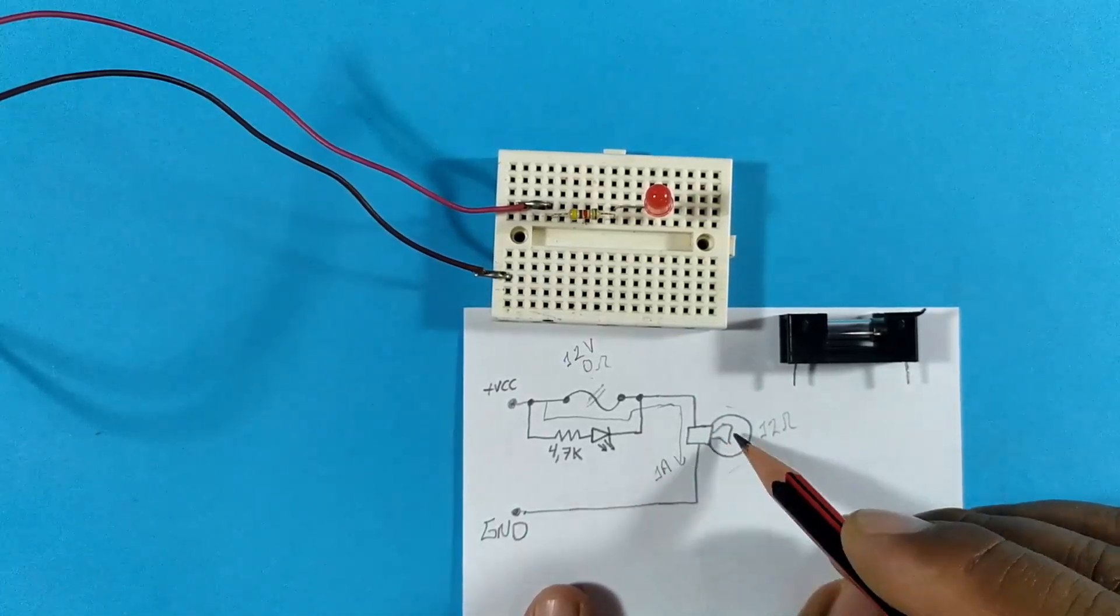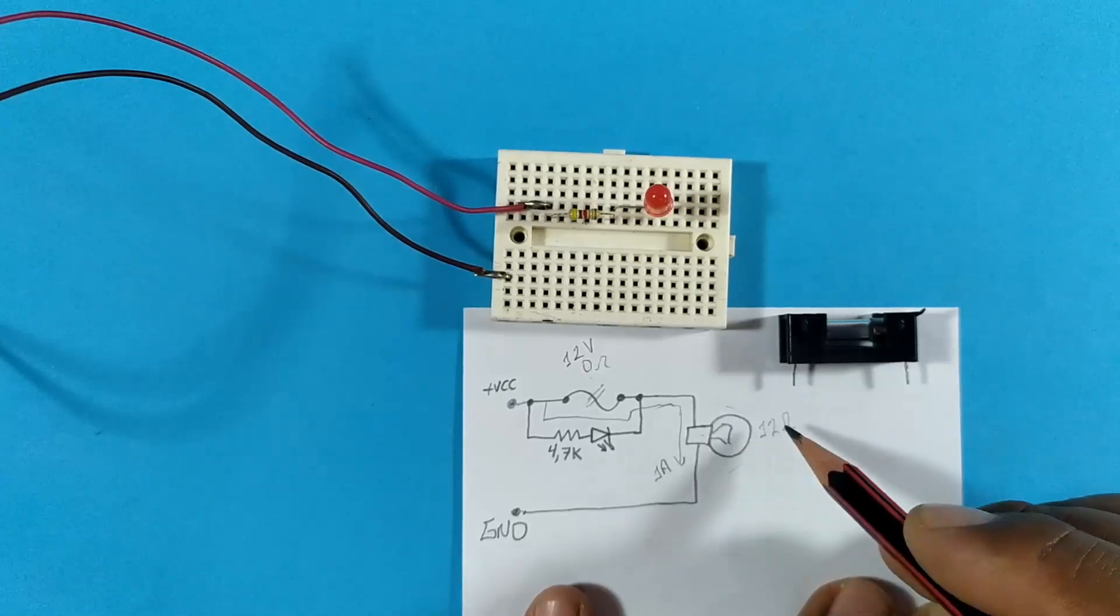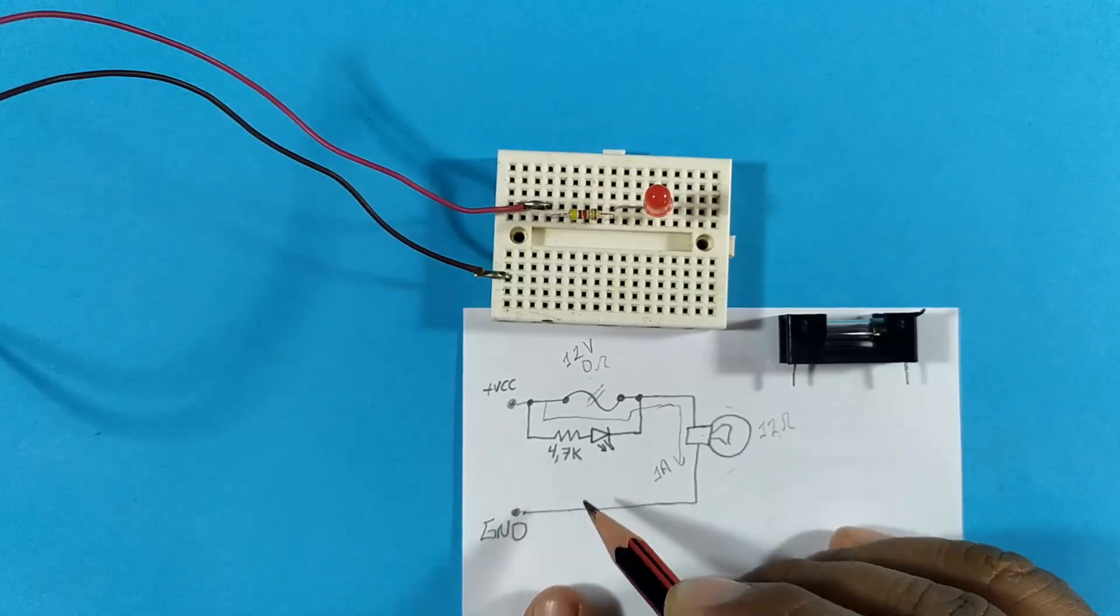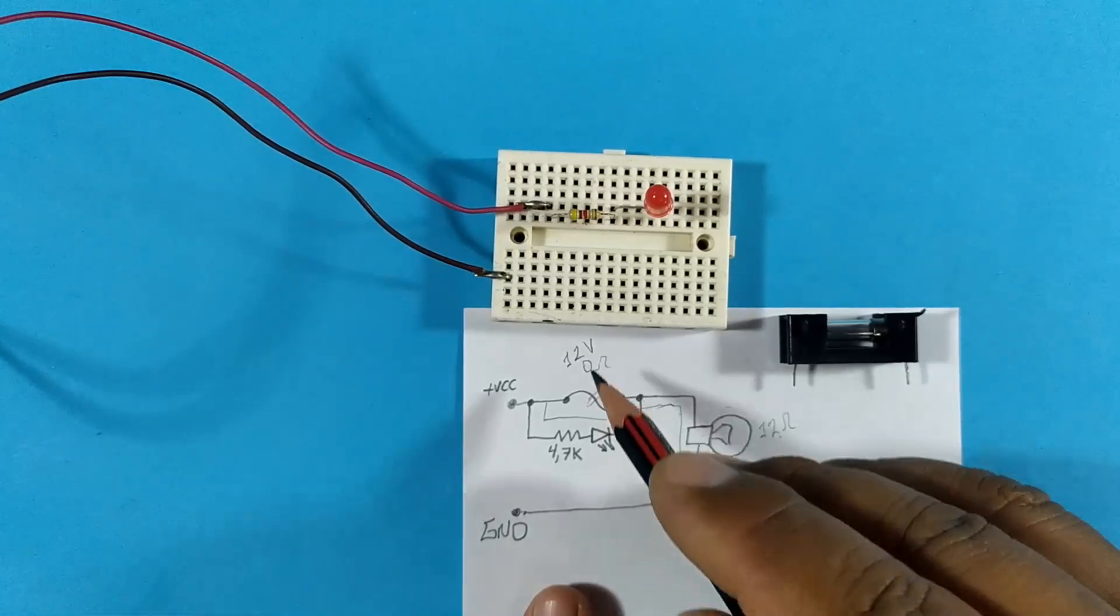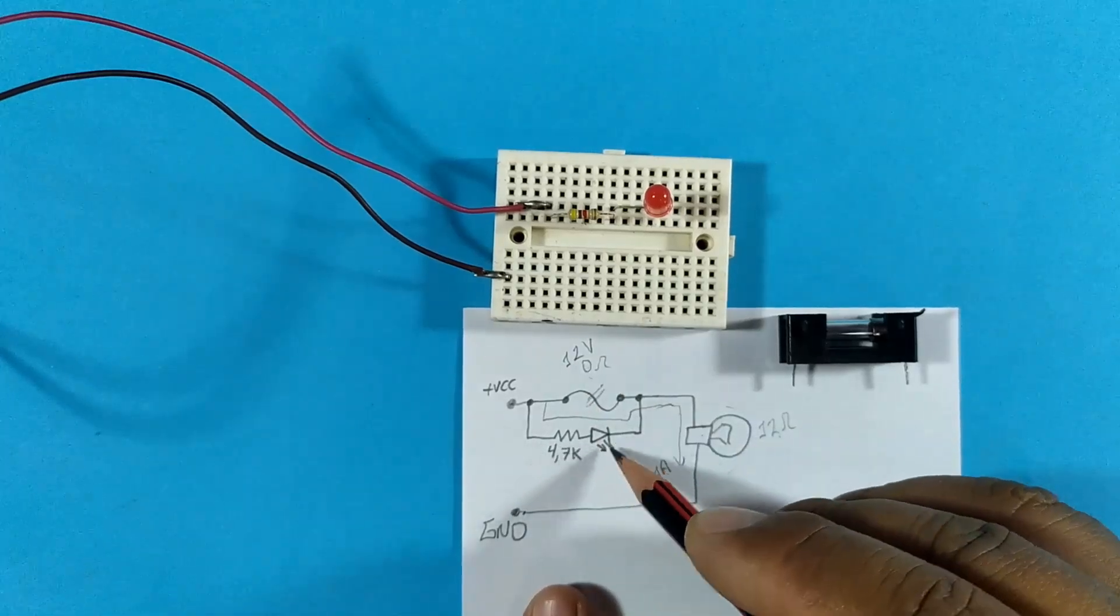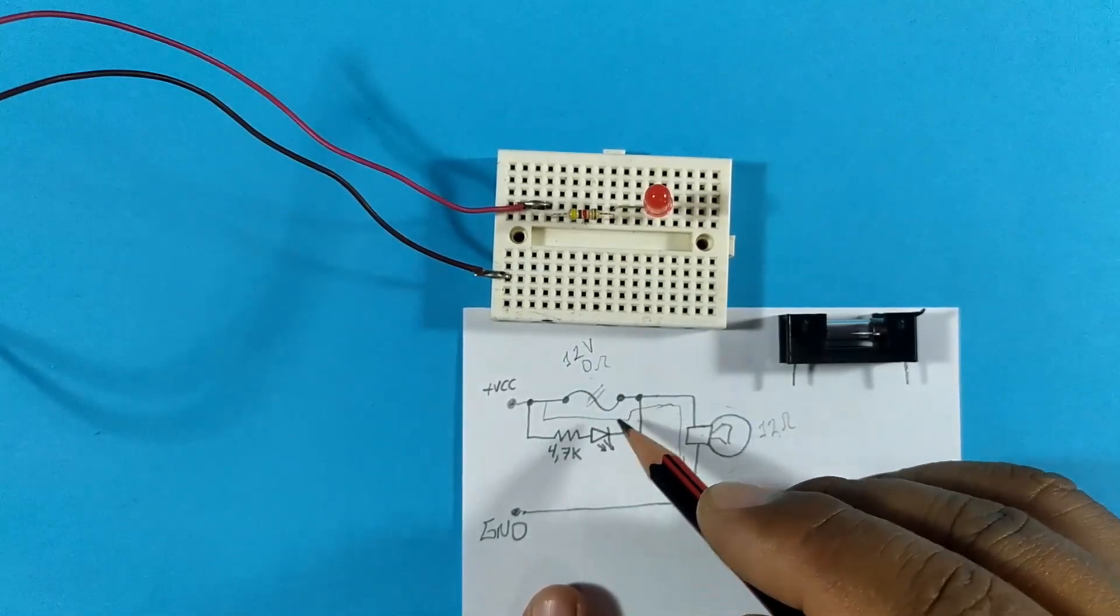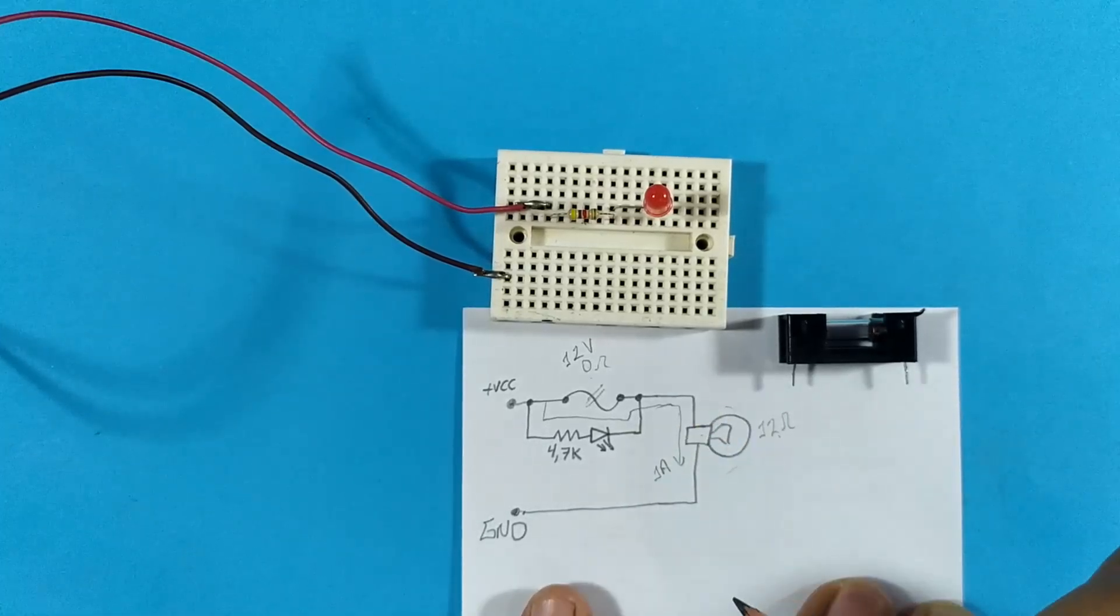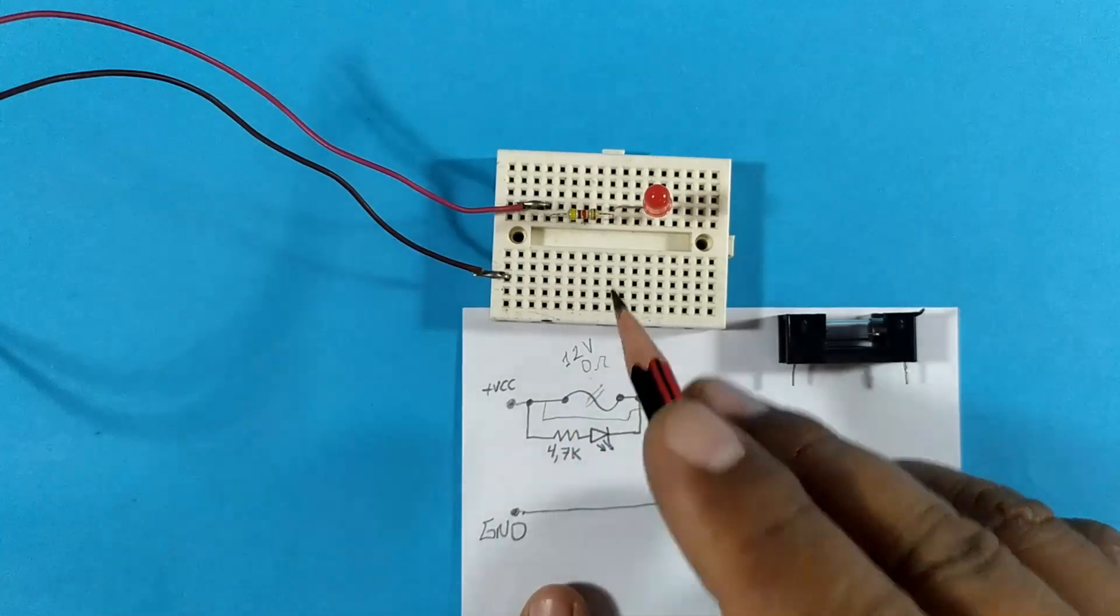However, since the resistance of the bulb is only 12 Ohms, and the resistance here is 4,700 Ohms, most of the voltage will fall on the LED and the resistor. So the LED will turn on, but the bulb will not turn on. This is how the circuit works.